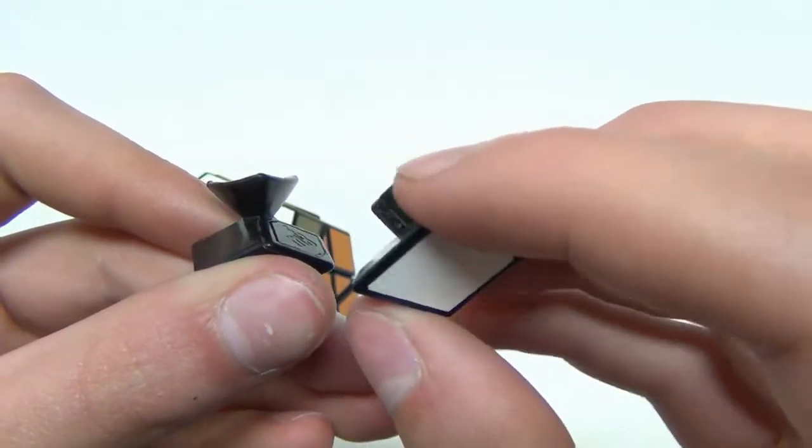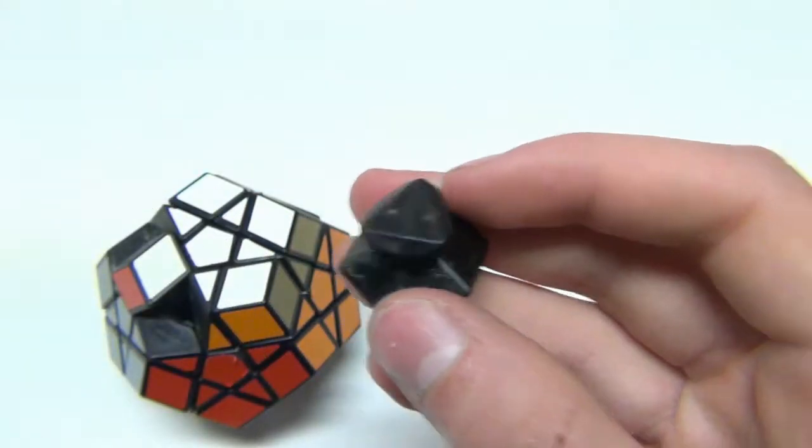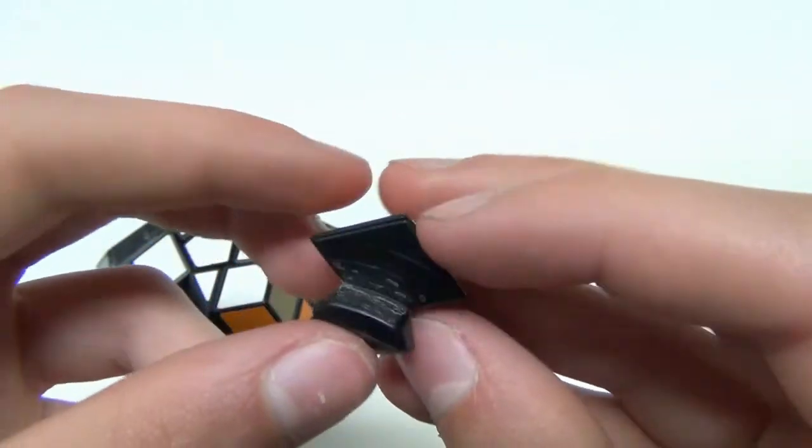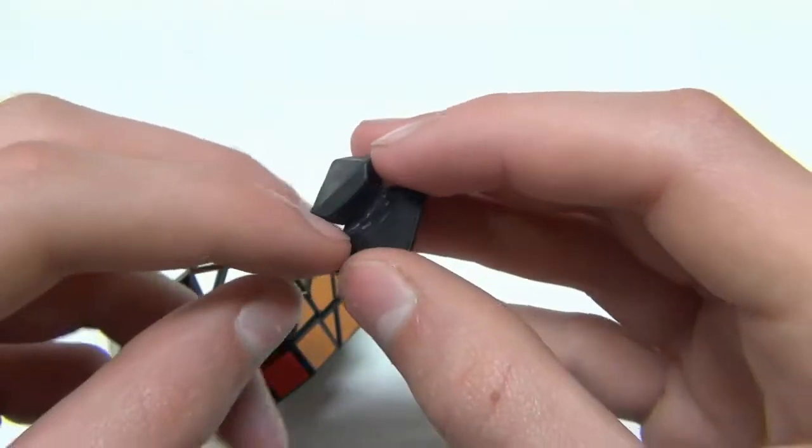You can clearly see it's like larger, thicker. It's kind of more rounded off. So that's actually a really interesting mechanism. I've never really seen a Megaminx corner that looked quite like that. So that's pretty interesting.